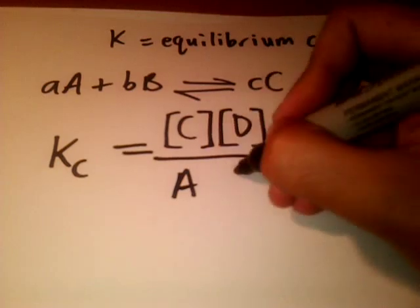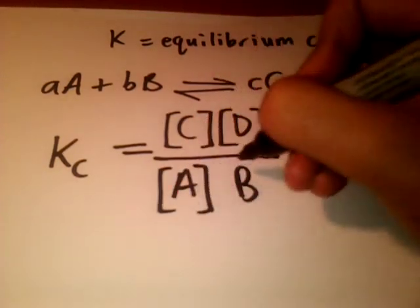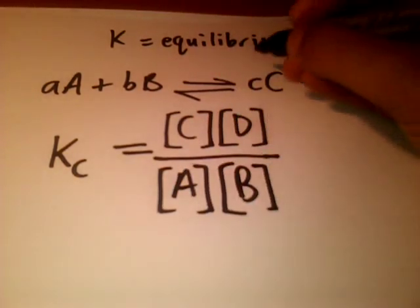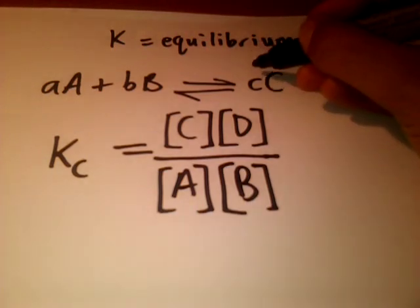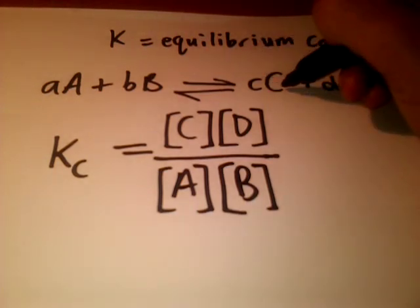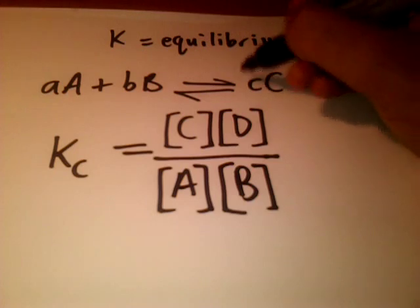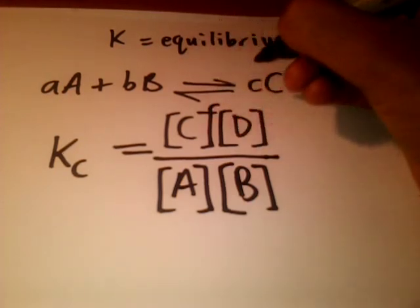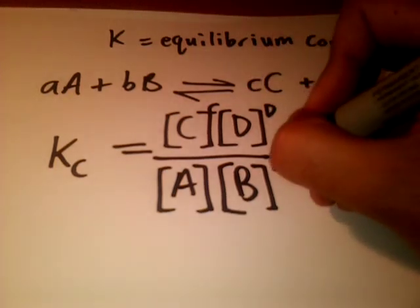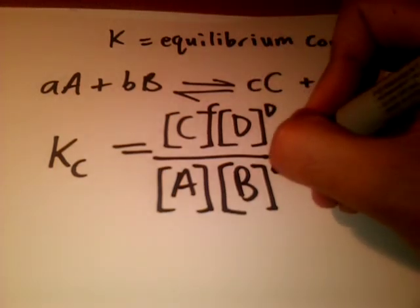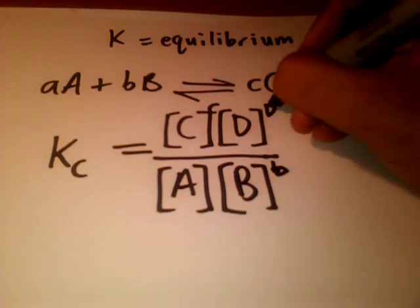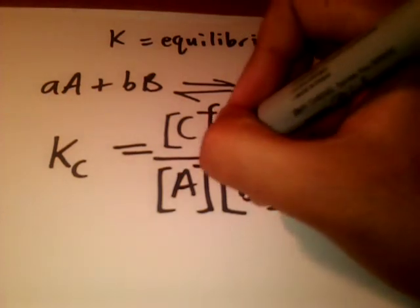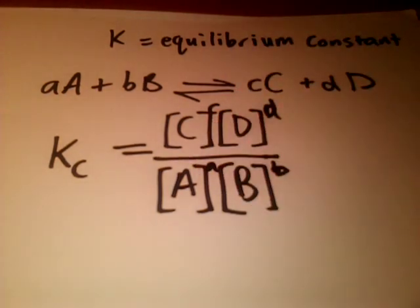So A and B. Imagine the lowercase letters are actually numbers. For example, if this was carbon and B was two carbons, you'd put two there. In this case we have c, d, b, and a. As I said, the right hand side of the equation goes at the top and the left hand side goes at the bottom.